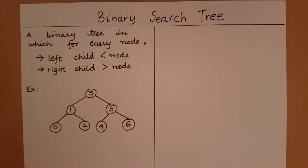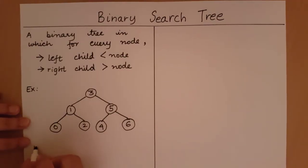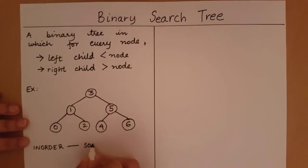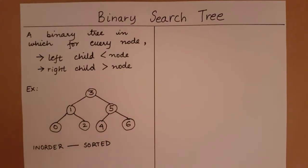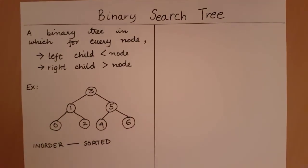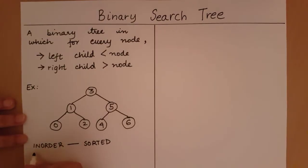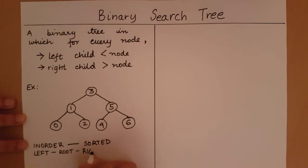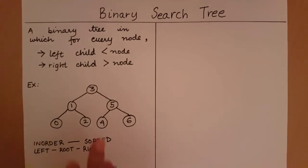What is so special about a binary search tree? Its specialty lies in the fact that the in-order traversal of this binary tree is going to result in the sorted order of these elements. In-order traversal means: first traverse the left subtree, then traverse the root, and finally traverse the right subtree.